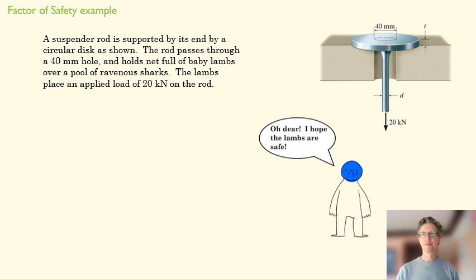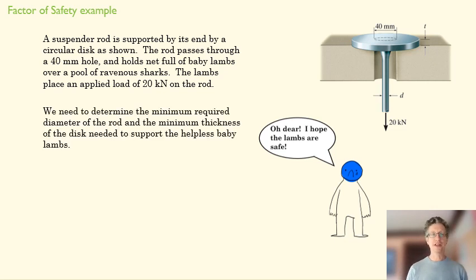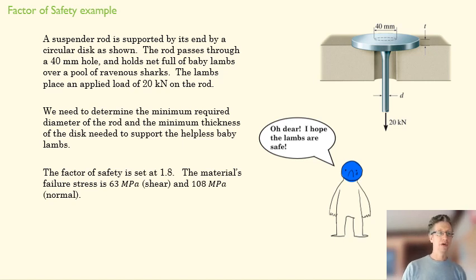So how do we do that? Well, we need to determine the minimum required diameter of the rod. There's going to be a normal stress along this rod, but there's also going to be a shear stress within the rod up here at the diameter of this larger hole. And so we want to make sure that both of those are going to be strong enough to hold up our baby lambs. So we're going to set our factor of safety at 1.8.